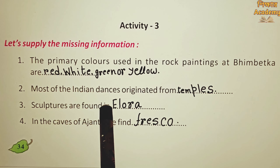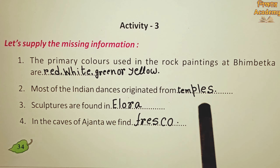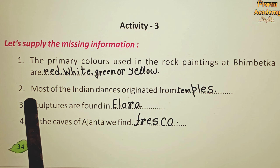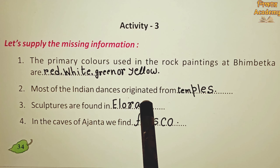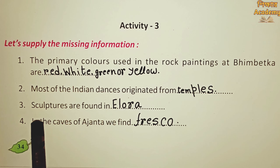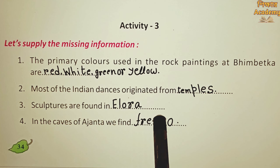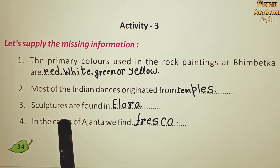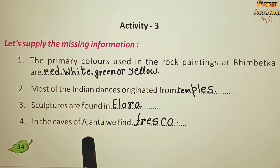Two: most of the Indian dances originated from temples. Three: sculptures are found in Ellora. Four: in the caves of Ajanta we find fresco.